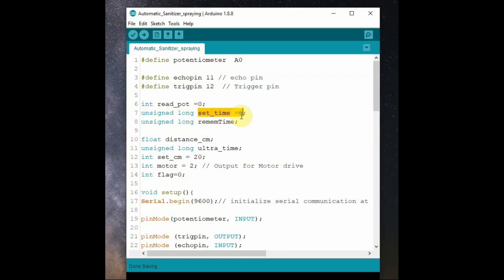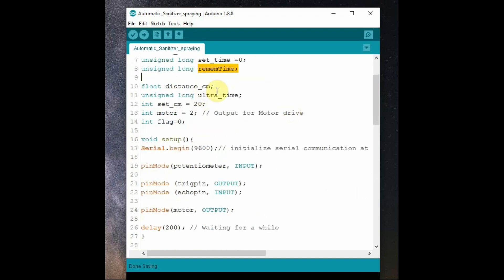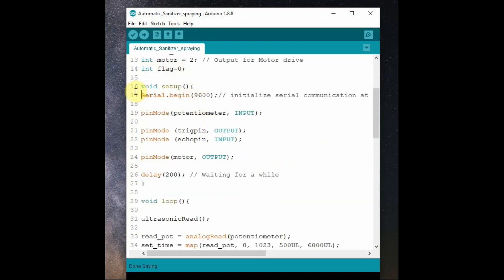Hence for timing variables we use unsigned long, it is a 32-bit variable to store huge values of time. All the time variables are declared as unsigned long and int set_centimeter is an integer variable. Here it is declared as 20, this is the distance of the ultrasonic sensing range. You can change it to any other value to change the distance sensing range of ultrasonic.